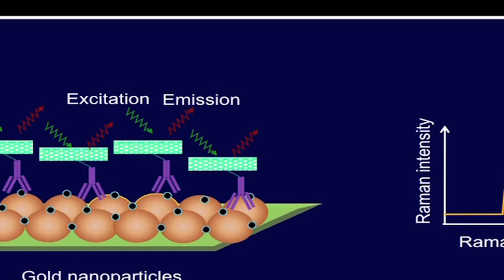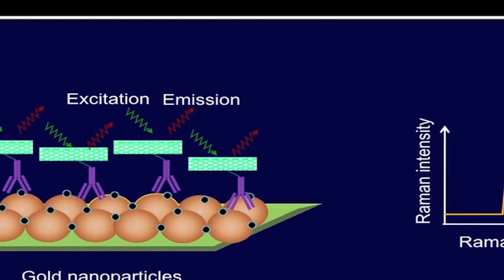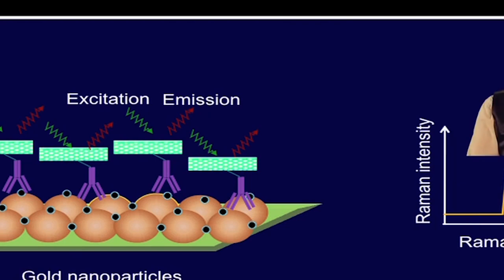Let us now discuss surface enhanced Raman scattering. An analyte is adsorbed onto or in close proximity to a prepared metal surface. The Raman excitation laser produces surface plasmons on the surface of the metal, which interact with the analyte to greatly enhance the Raman emission. Raman spectroscopy lacks sensitivity on its own, but silver and gold nanoparticles can enhance the scattering effect. The signal intensity of Raman active molecules is enhanced due to increased local electric field at the nanoparticle surface and by electronic coupling between the absorbed molecule and the gold nanoparticle surface. Gold nanoparticles functionalized with Raman-labeled antibodies show changes in Raman intensity due to binding.